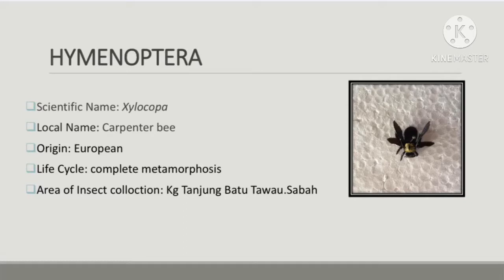Next is from order Hymenoptera and the scientific name is Xylocopa. The local name is carpenter bee, originating from Europe. The life cycle is complete metamorphosis — carpenter bees have four life stages: egg, larva, pupal, and adult. It takes about seven weeks for carpenter bees to reach adulthood, but developmental time varies depending on temperature and other environmental conditions.